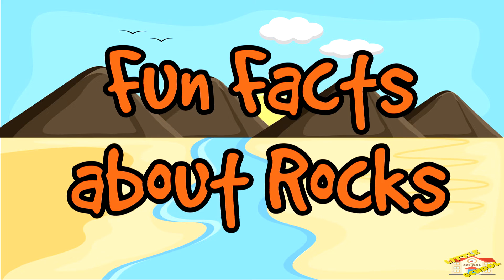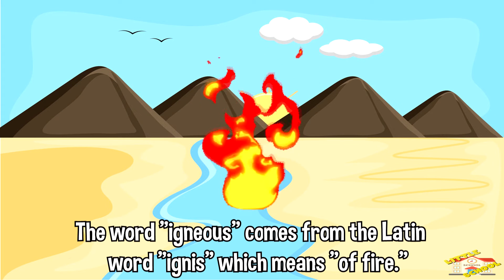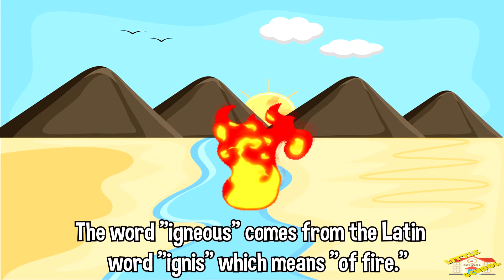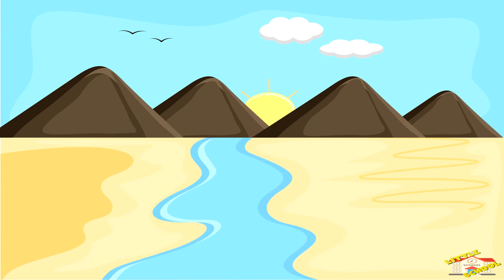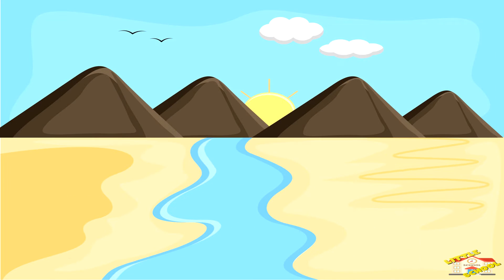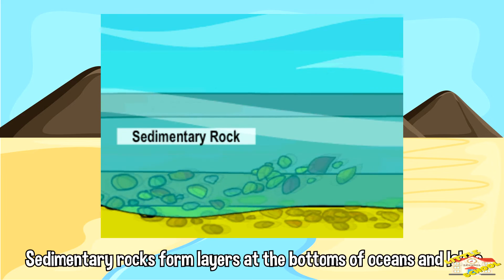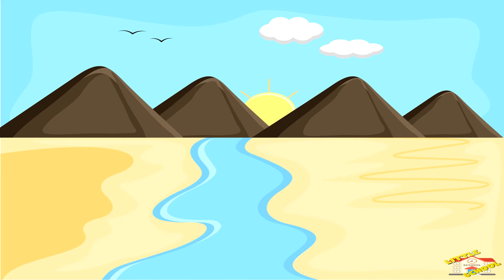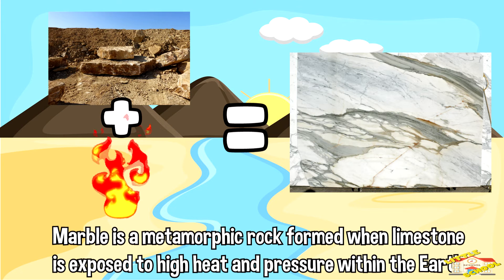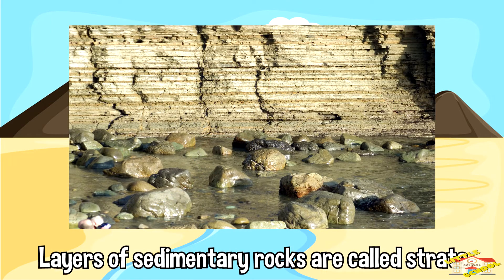Here are some fun facts about rocks. The word igneous comes from the Latin word ignis, which means 'of fire.' Ores are rocks that include minerals with important elements such as metals like gold and silver. Sedimentary rocks form layers at the bottom of oceans and lakes. Marble is a metamorphic rock formed when limestone is exposed to high heat and pressure within the earth. Layers of sedimentary rocks are called strata.